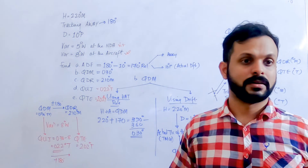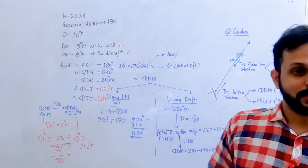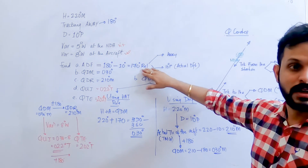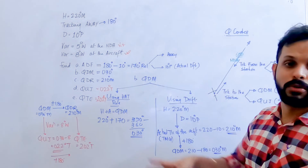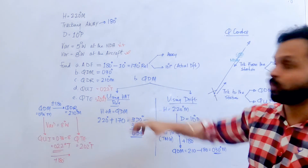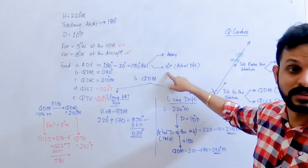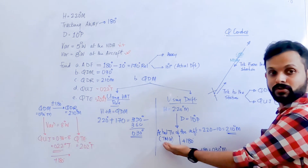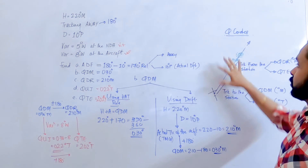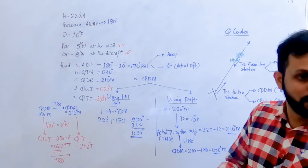So you get the same answers both ways. A couple of key takeaways from this question: first, understand the meaning of a 170-degree relative bearing — it's not just a value. We've seen with elaborate diagrams why the ADF reads 180 minus port drift. When you see 170 degrees, understand two things simultaneously: you're tracking away and there's a 10-degree port actual drift.